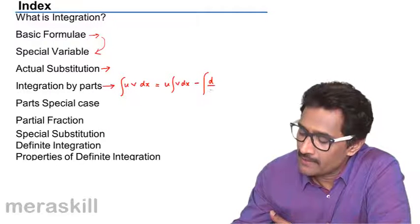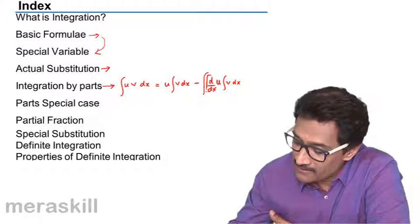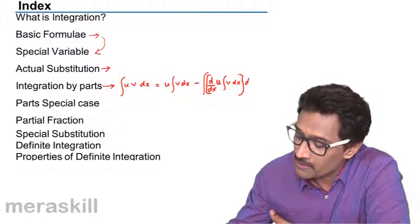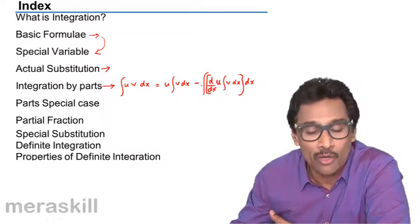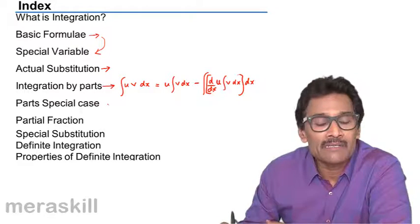minus the integral of derivative by dx of u and integral of v dx and the integral of this particular product. So this is a formula we call integration by parts. Then we'll be taking up parts special case also.